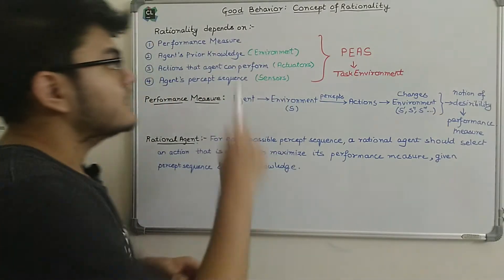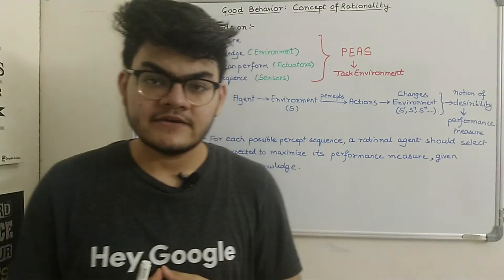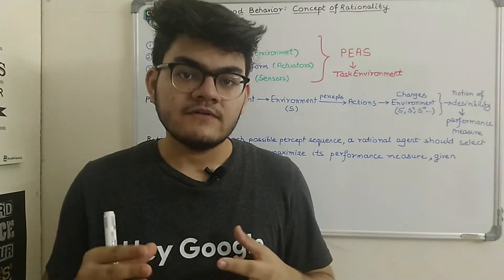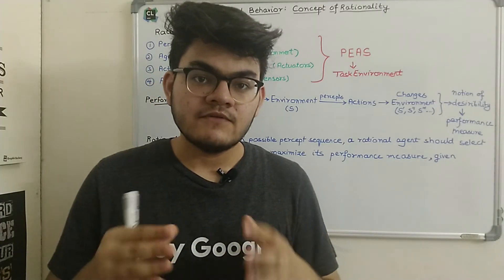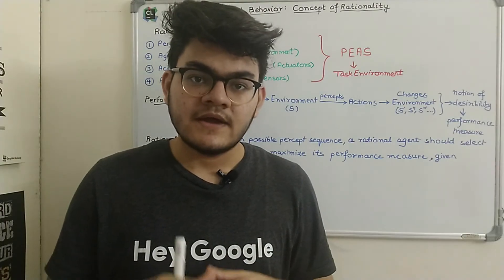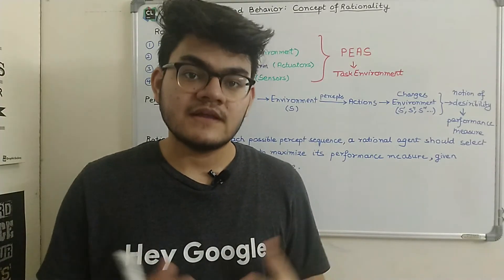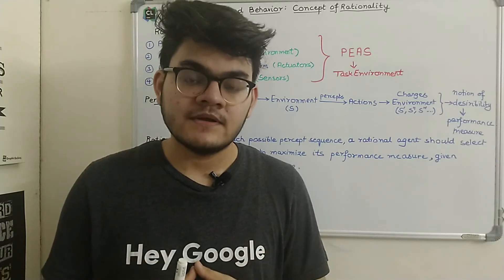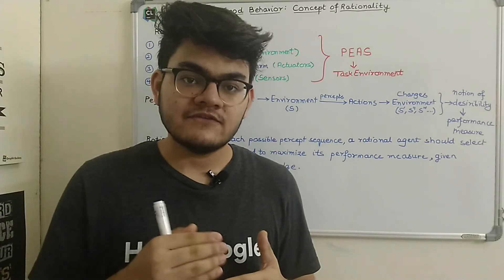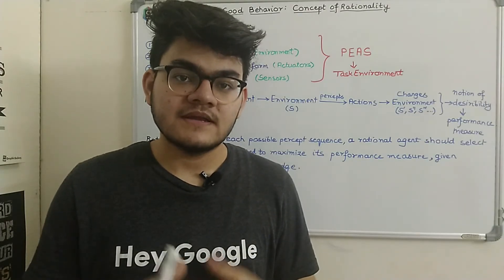we are going to study the good behavior or the concept of rationality in an agent. So the basic idea is that in artificial intelligence, whatever AI agent we are developing, we want that agent to work as per the desired actions. And those desired actions make the agent a rational agent and it is counted as good behavior. So basically, it is our objective to make an AI agent a rational agent, or you can say it should work as per the desired actions.